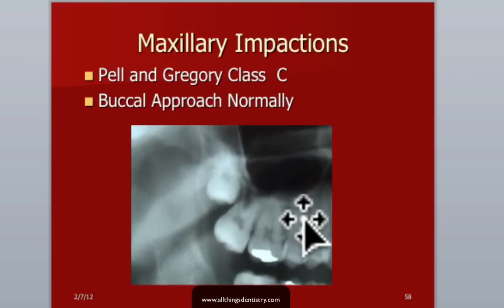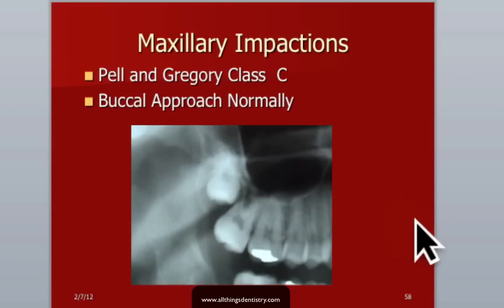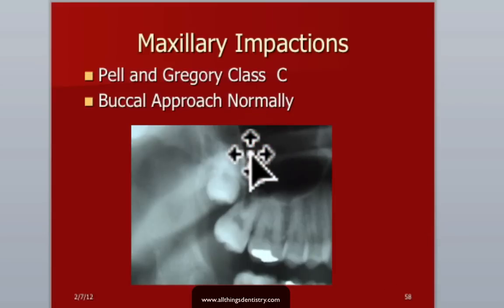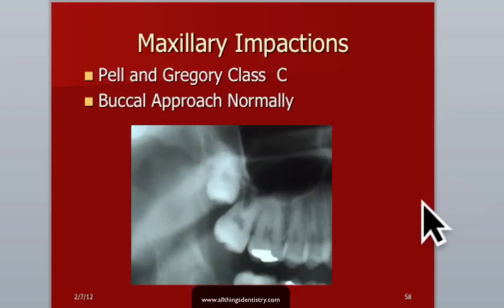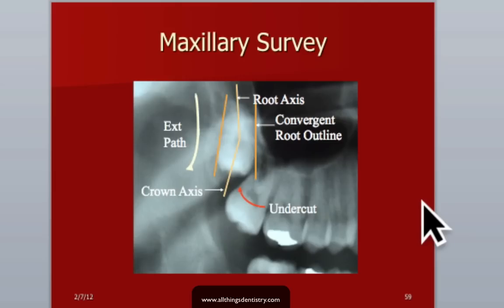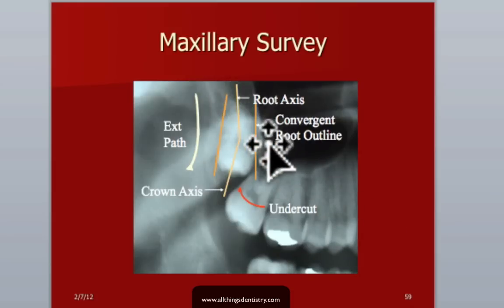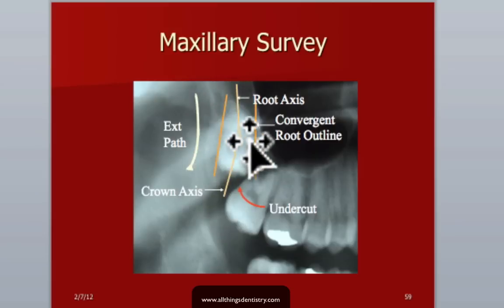We've worked a lot on mandibular teeth — now let's look at a maxillary tooth. You'll see a lot of these sometimes. This one we're fortunate is not actually in the sinus, but it's pretty close, so you have to be careful. In your informed consent, always tell the patient there's a slight possibility of a maxillary sinus opening. Doing a quick survey — we're lucky these root shapes are kind of cone-shaped, so it should come out once you get access. But notice that the crown and root are on different axes, so it's going to have a curved path of extraction.